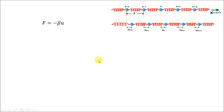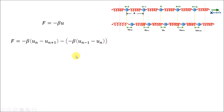If u is the compression or elongation in the spring with spring constant beta, then due to that compression or extension a spring force equal to minus beta times u is generated. Pertaining to the above discussion, we get the expression for the force acting on the nth atom, where the first term is the spring force due to the relative displacement of the (n+1)th atom compared to the nth atom, and the second term is the spring force due to the relative displacement of the (n-1)th atom relative to the nth atom.